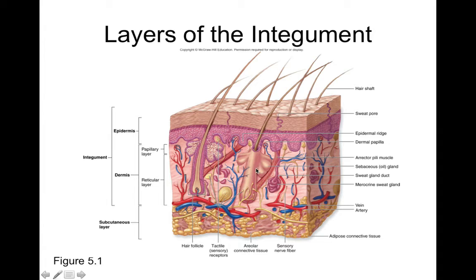We also have sweat glands — specifically eccrine sweat glands — which secrete a watery solution on the surface of your skin to help cool down. Hair follicles have sebaceous glands associated with them, which are essentially our oil glands that help condition your skin and serve as a waterproofing barrier. Your hair itself is made of keratin, a very strong protein, and the functions of hair involve protection and sensory reception.